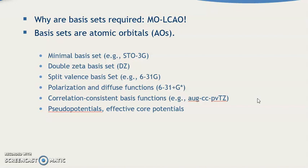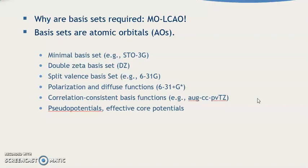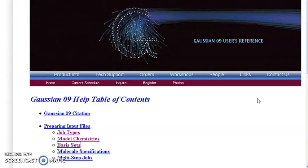Why are basis sets required? MOLCAO — basis sets are atomic orbitals. Minimal basis set example: STO-3G. Double zeta basis set: DZ. Split valence basis set: 6-31G. Polarization and diffuse functions: 6-31G with polarization, 6-31G with polarization-consistent basis functions, aug-cc-pVTZ. And pseudo-potential / effective core potential. You can see the Gaussian online help — go through the website and you will get all this information.